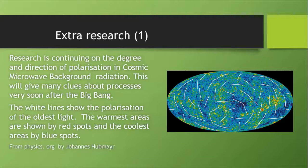As we come to the end of this presentation, research is continuing on the degree and direction of polarization in cosmic microwave background radiation. This is certainly thought to give many clues about the processes very soon after the Big Bang. My diagram here, the white lines show the polarization of the oldest light. The warmest areas are shown by red spots and the coolest area by blue spots. It's certainly worth looking at, although it's not on your specification as such.